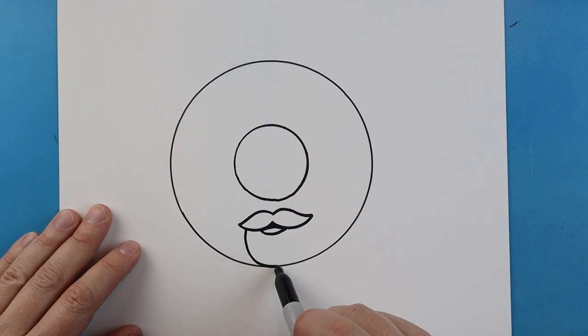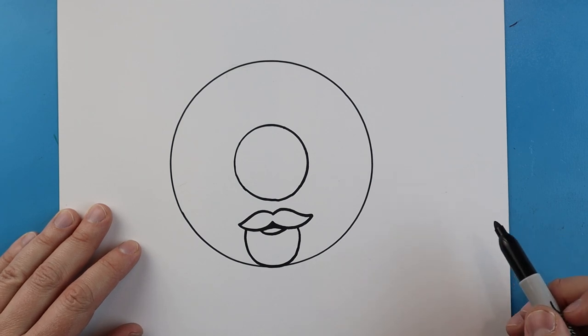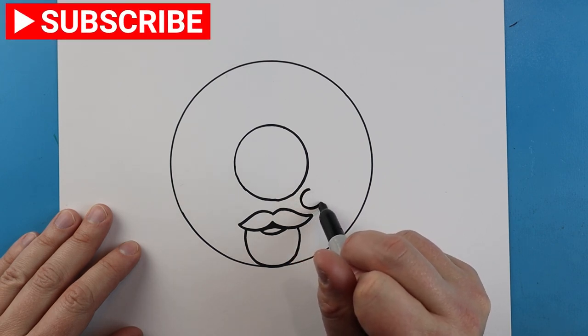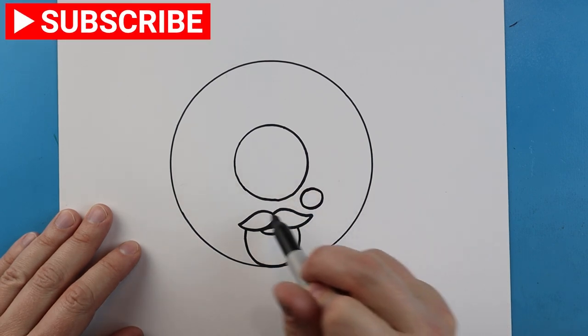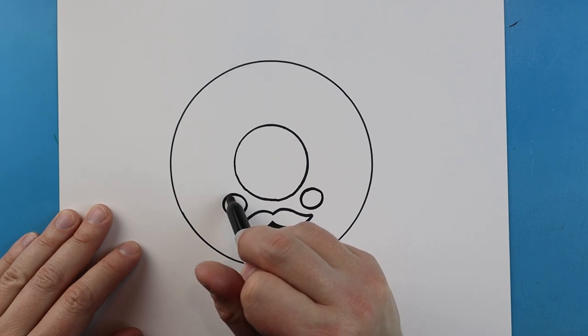Then right here I'll make a little line that's going to come down and come up here for the beard. Right here I'm going to draw a circle shape for an eye. Then we'll do the same thing on this side. Just make a little circle shape for the eye.